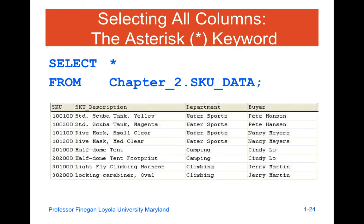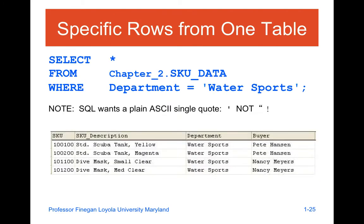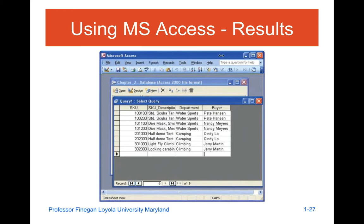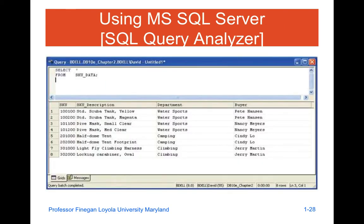The asterisk in terms of selecting all is a favorite. Additionally, you can use conditional expressions for specific rows from the table, even if you're selecting all, or map it back to specific rows from one table. When using the SQL view with Access, you get a fair amount of query results.